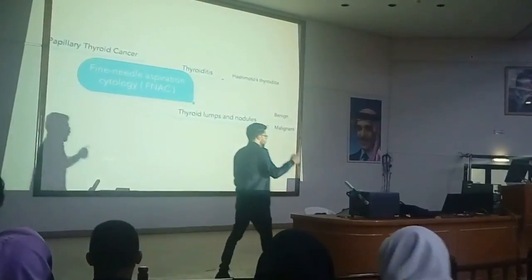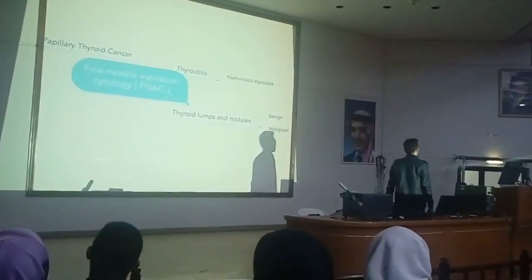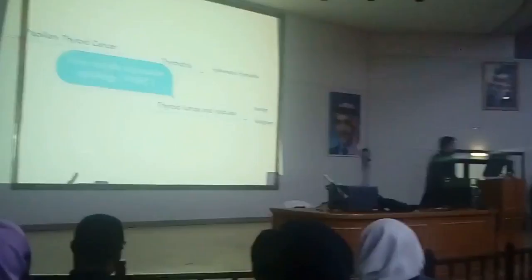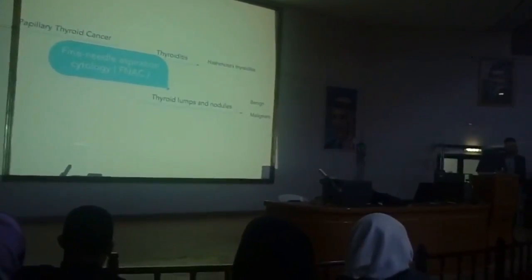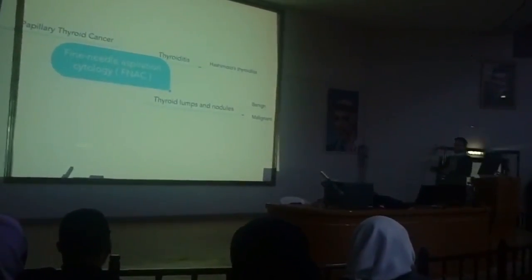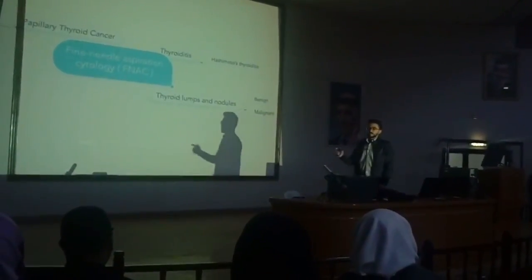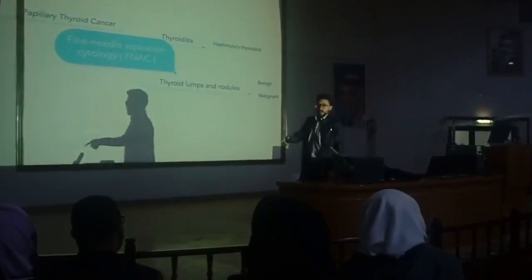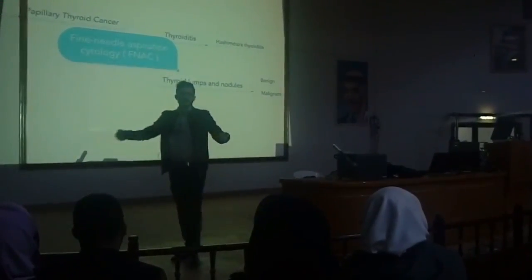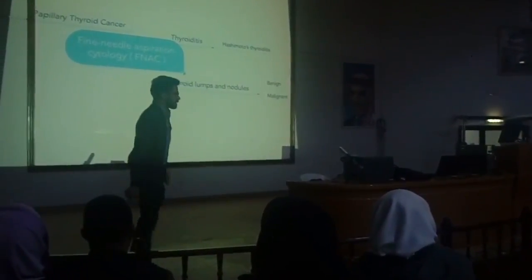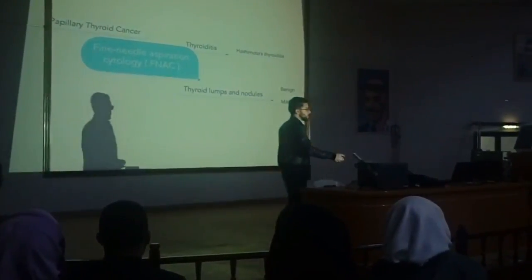In this subject, I am going to talk about three main things. The first thing is thyroid nodules, which is divided into two parts: benign and malignant. The second main thing is thyroiditis — I have chosen a specific type of thyroiditis, which is Hashimoto's thyroiditis, and you will find out why I have chosen this type in the next slides. The last thing I am going to talk about is papillary thyroid carcinoma.